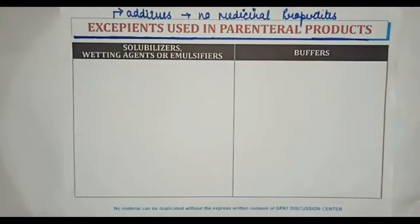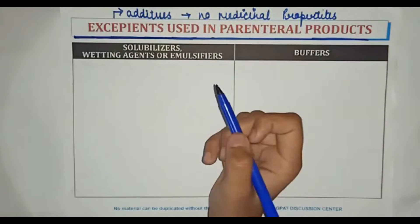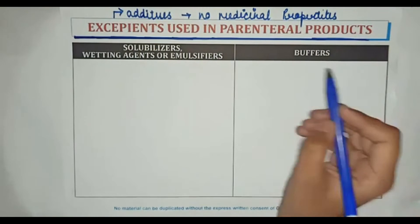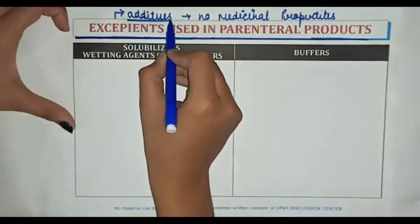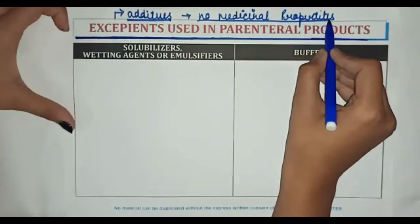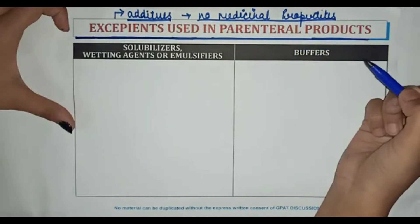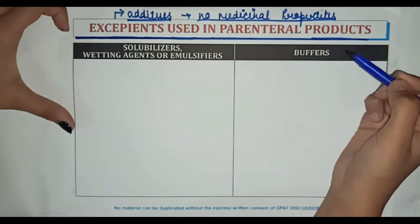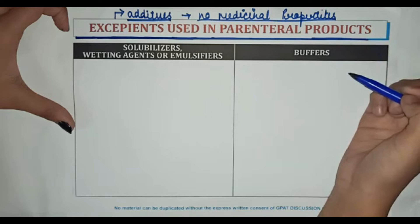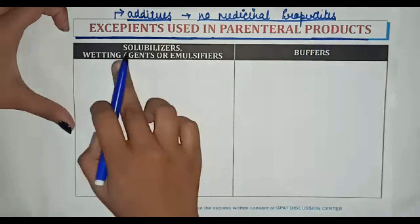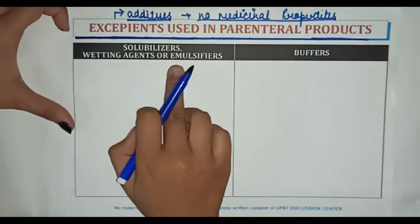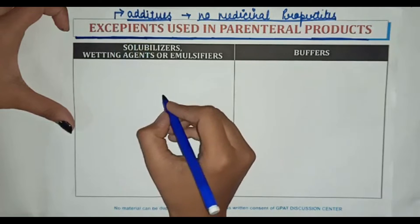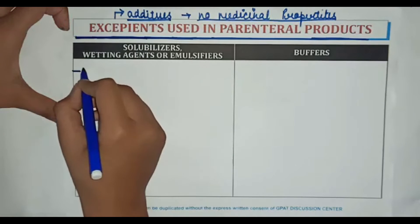Hello farmers and parents. In this video we will discuss about excipients used in parenteral products. Excipients are additives and they have no medicinal properties. An excipient is usually an inert substance added to the drug to give stable consistency to the drug.